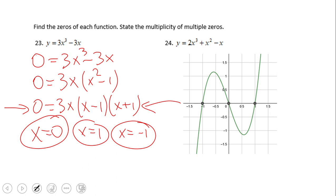The graph is like that. Again, multiplicity one, three, five—an odd number—the graph crosses the x-axis. You see it crossed at negative one, it crosses at zero, and it crosses at one, because the multiplicity in this case is one, an odd number. Pause this video clip and try number 24.